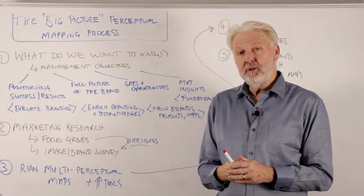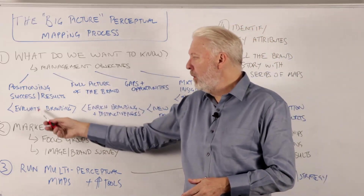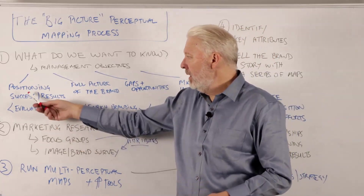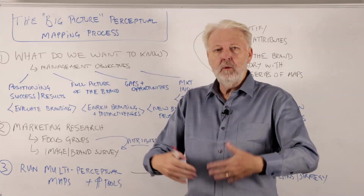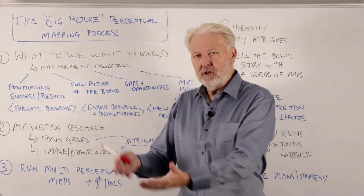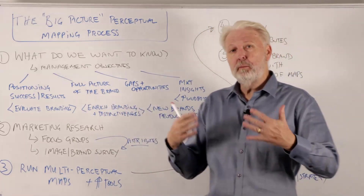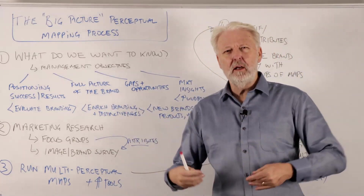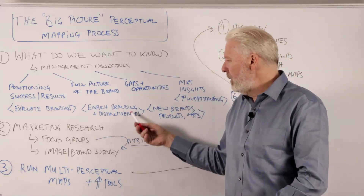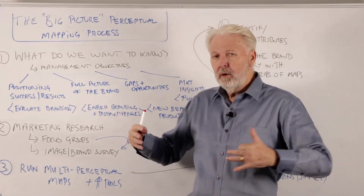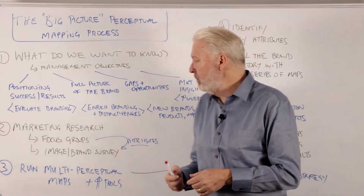In terms of using perceptual maps, I've got four possibilities. One: we want to evaluate our branding activities, looking at our positioning success and results. We've invested in it, we're trying to reposition or strengthen our positioning — how have we done? We might also want to flesh out a full picture of the brand, to dig into it and see what attributes and values people associate with it, and we may have plans to really focus on enriching our branding and creating a distinct brand in the marketplace.